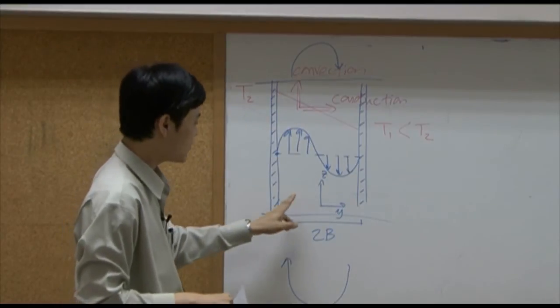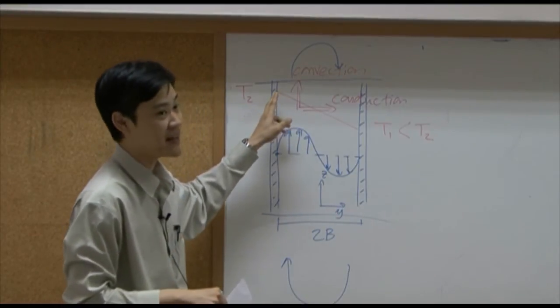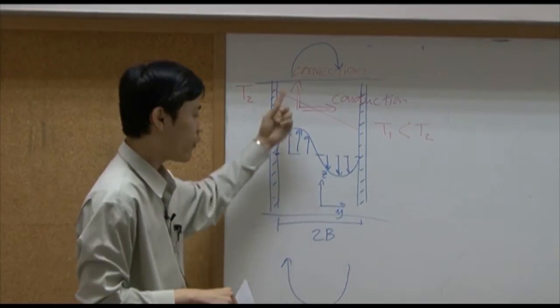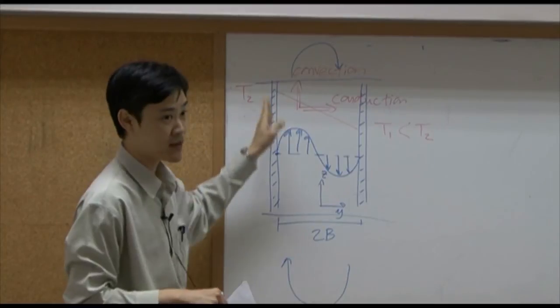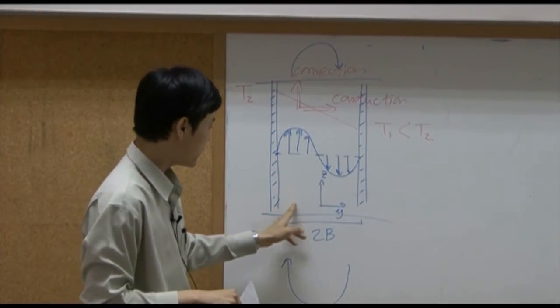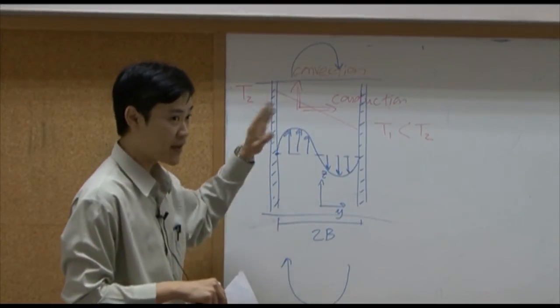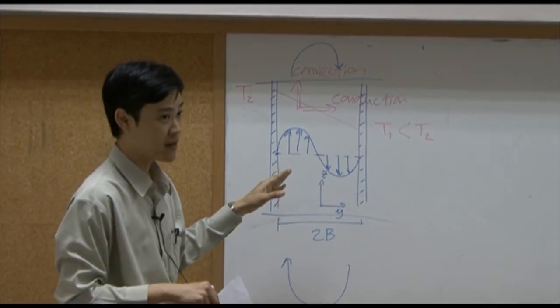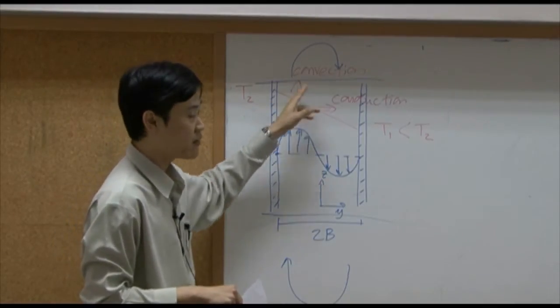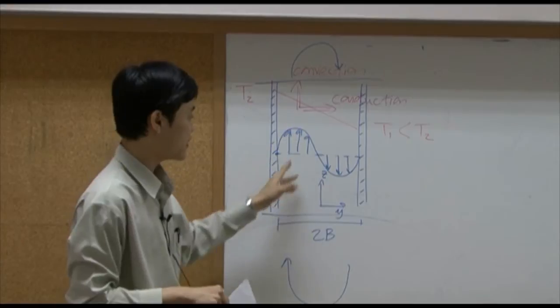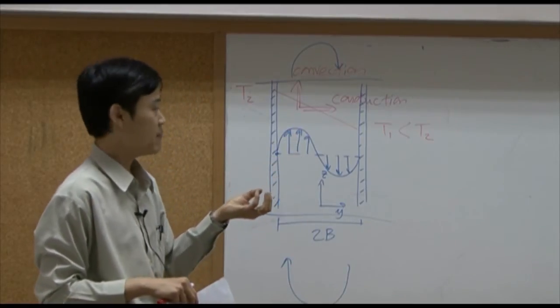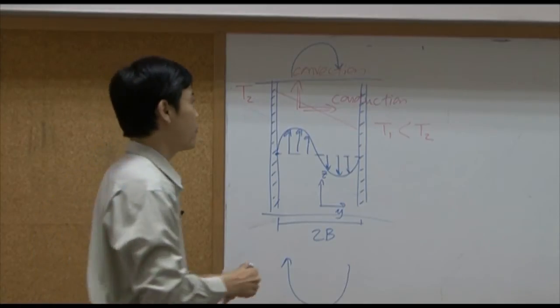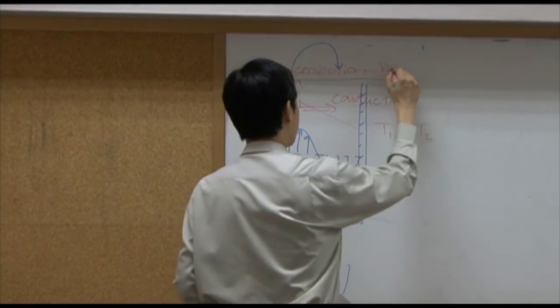That means temperature here and there may not be exactly the same and there will be flow as well. So in detail, there will be both convection and conduction in Z direction. But temperature difference here and there may not be significant. We can drop the conduction term easily. Then the convection term, if we assume that velocity due to the rise in difference of the density may not be significant, we may just neglect it.